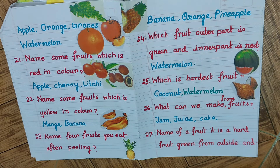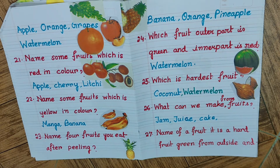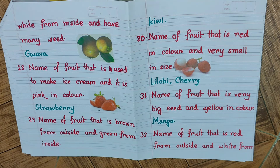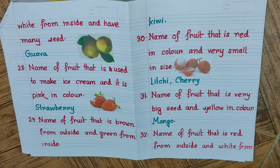The clues from the previous page were: hard fruit, green from outside. And the additional clue is: white from inside and has many seeds. So we are talking about guava, as you can see from the picture beside the answer. Question number twenty-eight: name a fruit that is used to make ice cream and is pink in color.